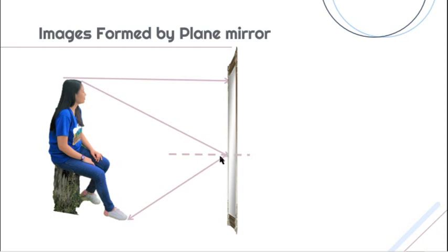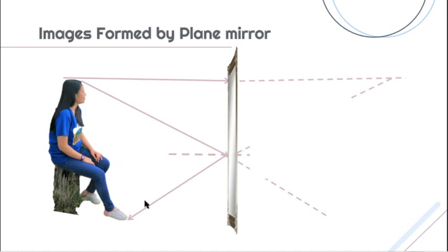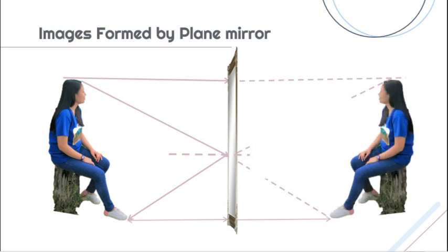By extending these reflected rays to the back of the mirror, we can notice intersections of rays. The distance of the object from the mirror will be the same as the distance at the back of the mirror. At the intersection of the extended rays, the image is formed.